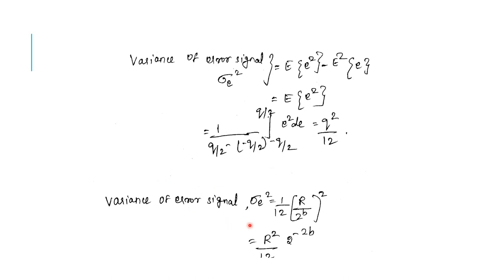The variance of the error signal, sigma E squared, equals Q squared divided by 12. For two's complement, Q equals R divided by 2 to the power B. Substituting, the final formula becomes sigma E squared equals R squared divided by 12, times 2 to the power of minus 2B.